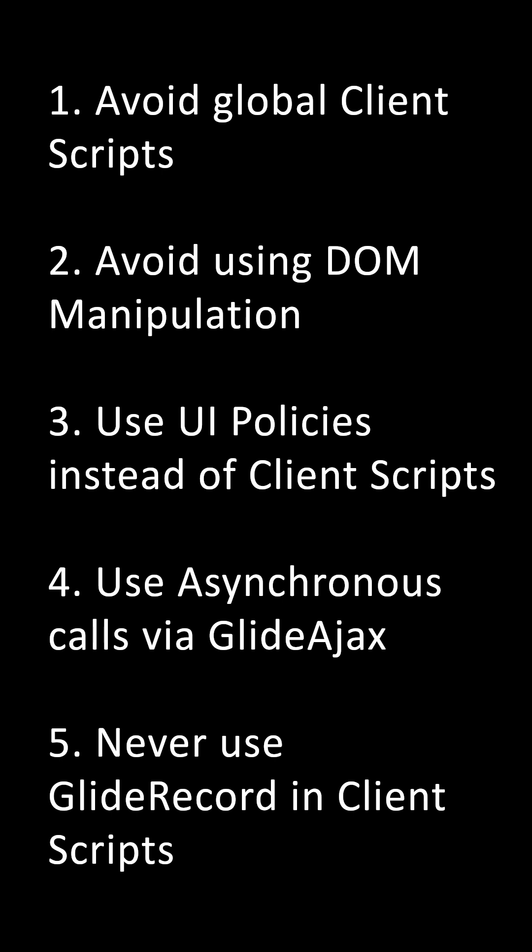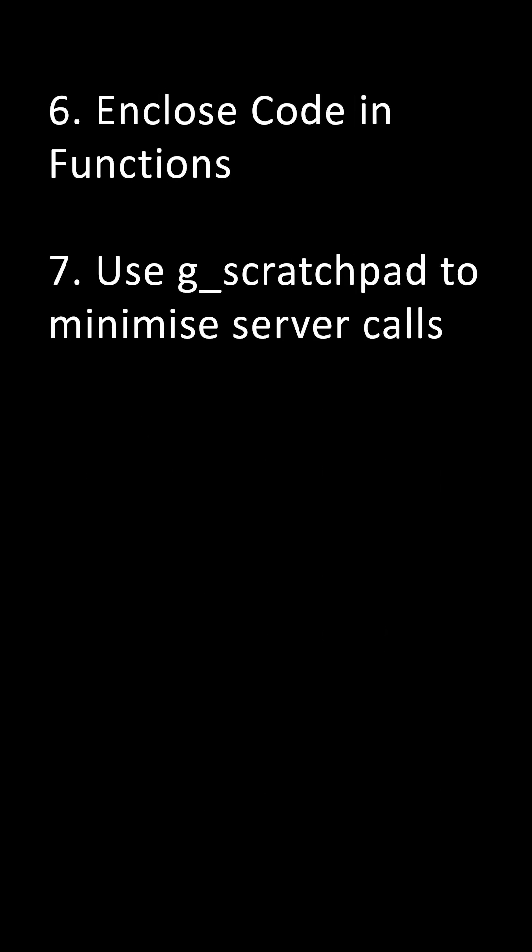Point number five: Never use GlideRecord in client scripts. Point number six: Enclose code in functions, because client scripts in ServiceNow without a function can cause issues with variable scope.